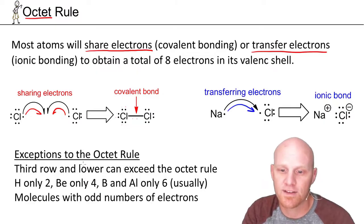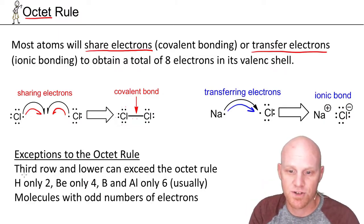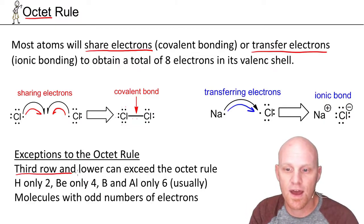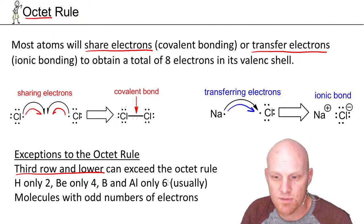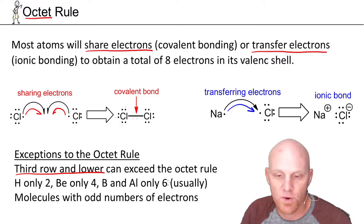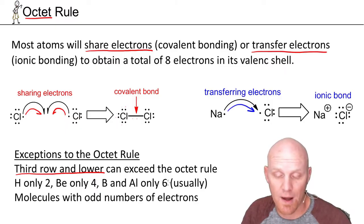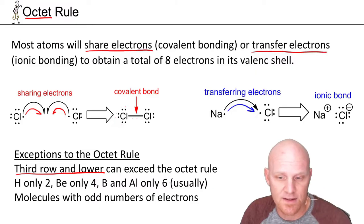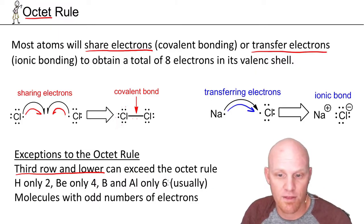Not everybody's going to follow the octet rule, so some things you should know. If you are in the third row and lower, you can go over the octet rule. Atoms like sulfur, iodine, and bromine can go over the octet rule — they don't have to, but they can. You'll see this more commonly in a general chemistry context than in organic chemistry. The idea is that you've got d orbitals you can tap into starting in the third shell.